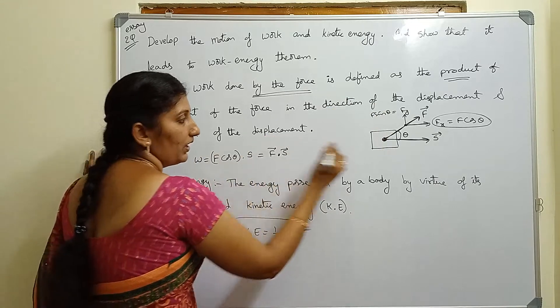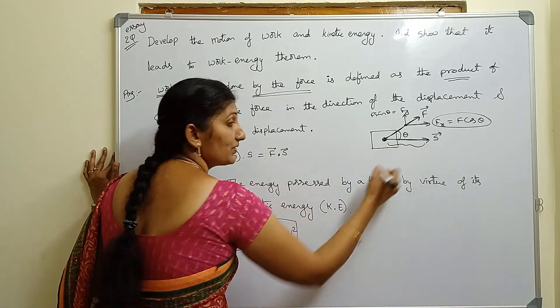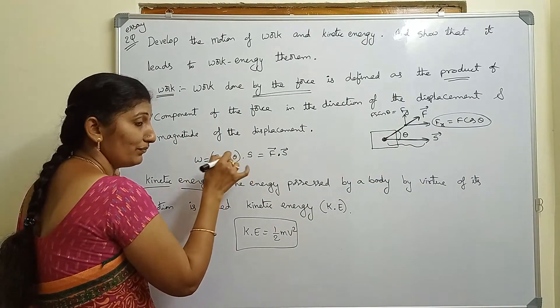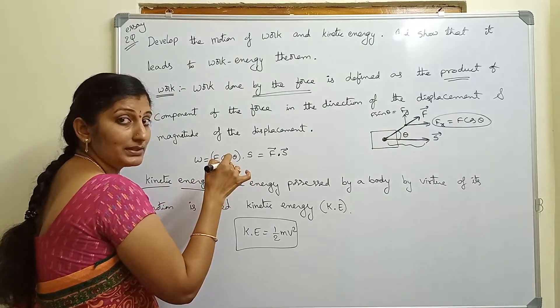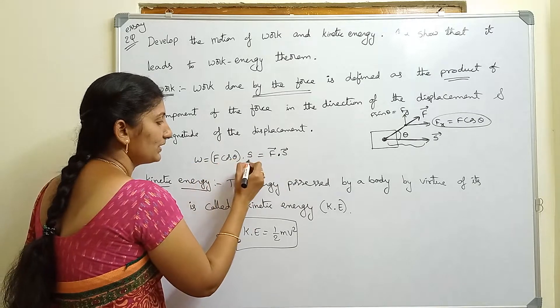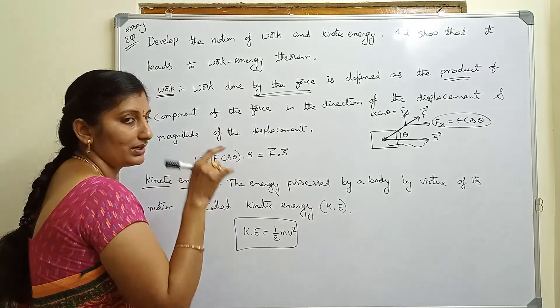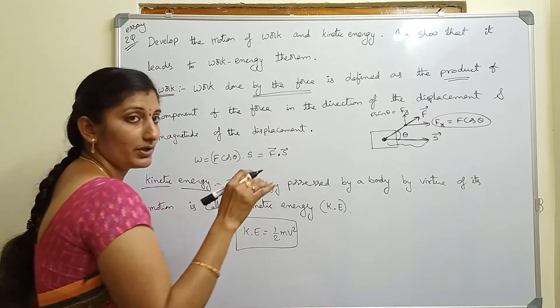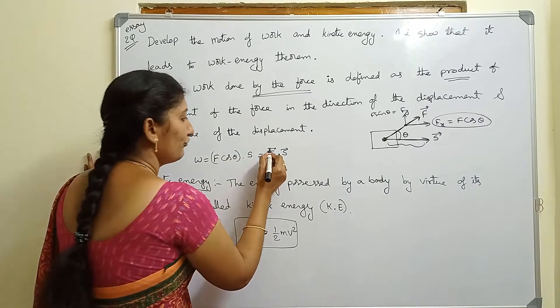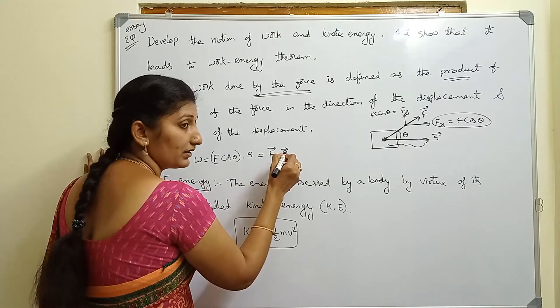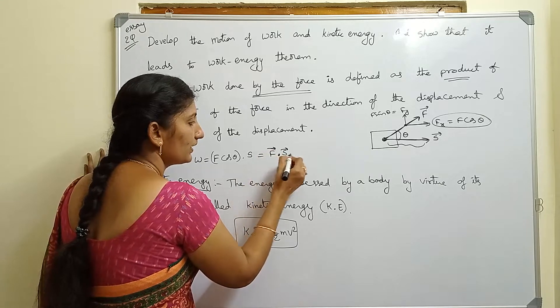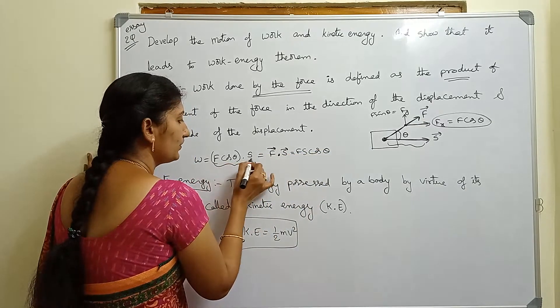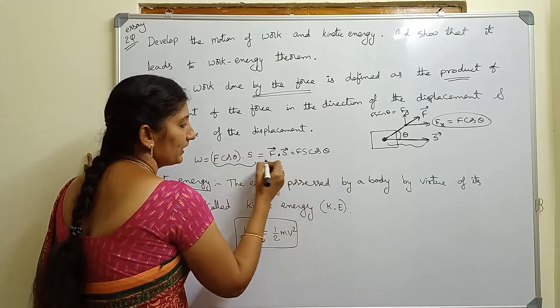Work is equal to the component of force in the direction of displacement times the magnitude of the displacement. In vector notation, this is the dot product: F vector dot S vector. This equals F cos θ into S.